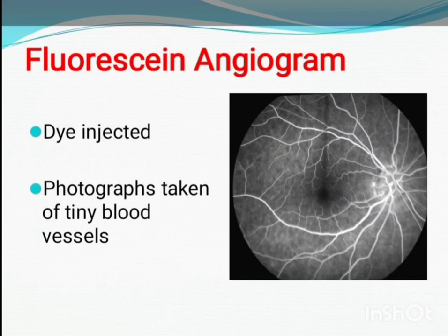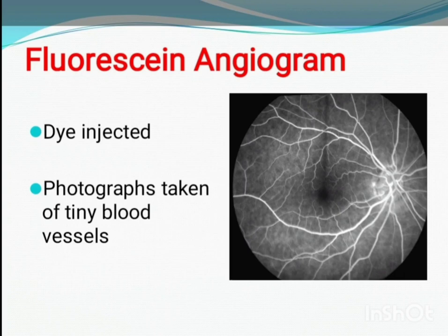If wet AMD is suspected, you will be referred to a retinal specialist, a doctor who deals with the retina or macula at the back of the eye. This specialist will perform a fluorescein angiogram. During this procedure, a dye is injected into your arm; it circulates through the bloodstream, making the tiny blood vessels of the eye visible. The doctor looks for signs of bleeding, which indicates wet AMD. The retinal specialist will advise you and offer treatment if appropriate, and you will likely return to your regular eye doctor for further checkups.